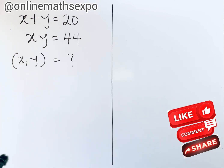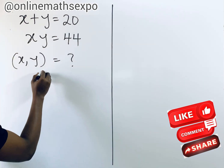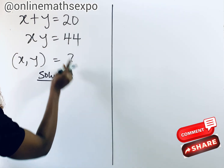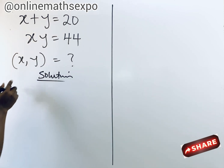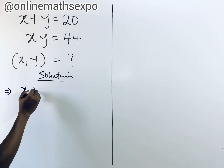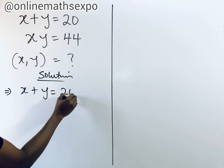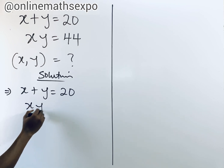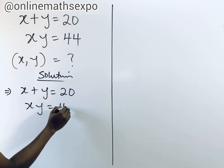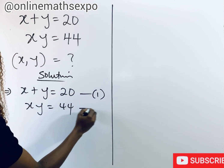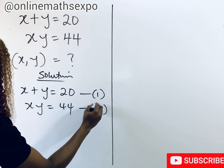It's just so easy to work on. Let's do that together. So we're going to begin this with the solution. Let's repeat what we have. We have 2x plus y is equal to 20, and xy is equal to 44. We can call this equation 1 and this is equation 2.